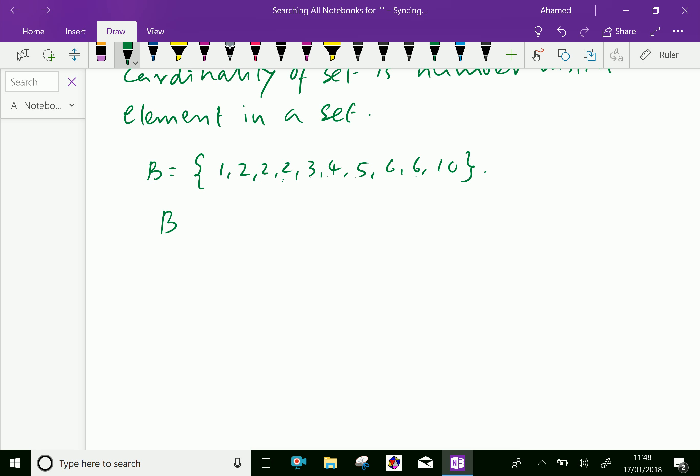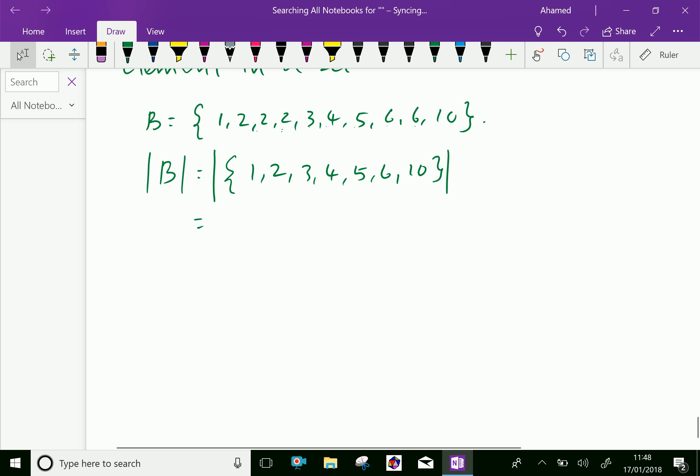For set B, we write 1, then 2 (which appears 3 times, we write only once), 3, 4, 5, and 6 (which appears 2 times, we write only once). Now the cardinality of set B is 7, because set B has 7 distinct elements.